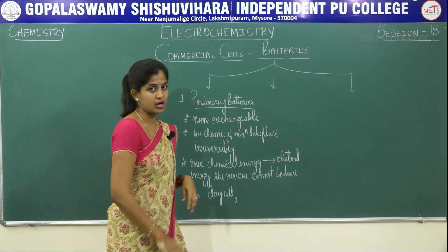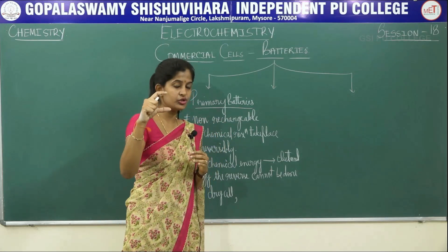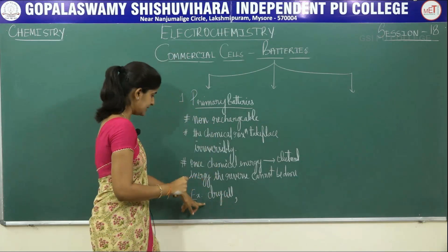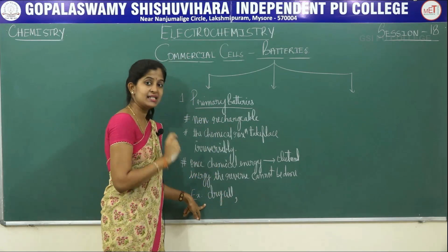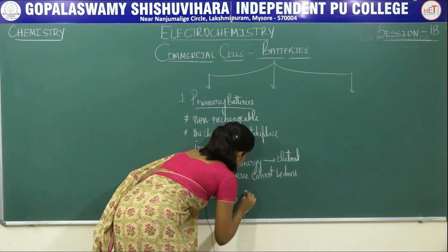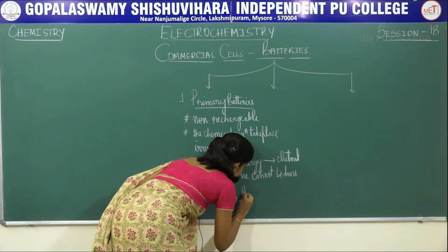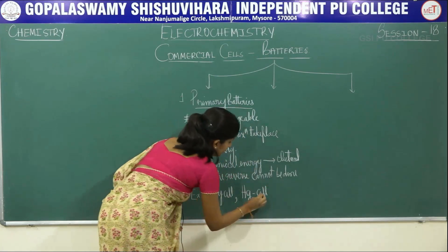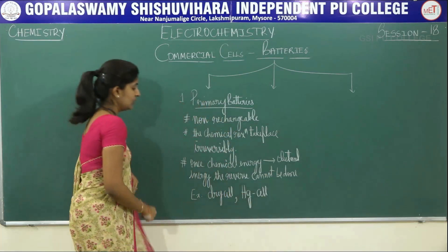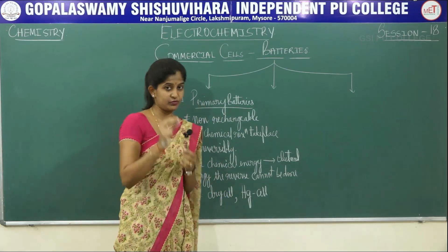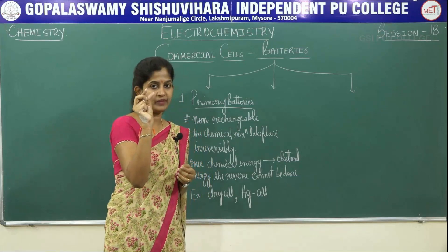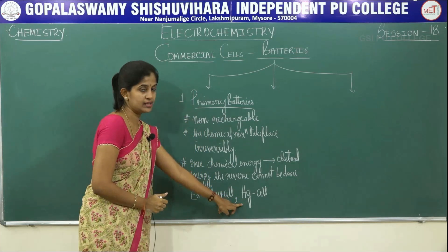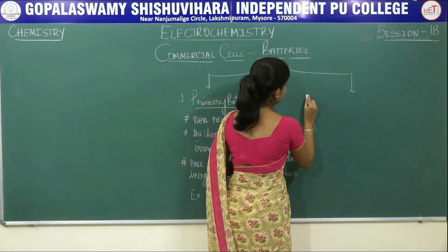Dry cells are the cylindrical-shaped cells you use in your wall clocks. Mercury cells are the small oval-shaped cells used in wrist watches and calculators.